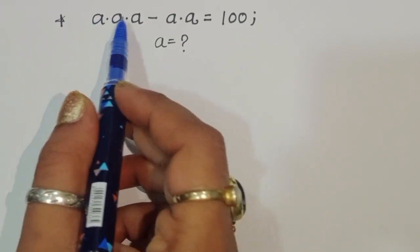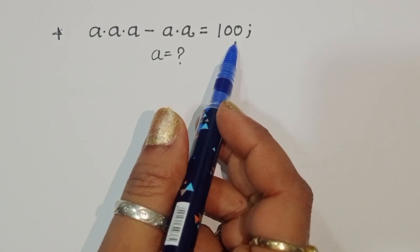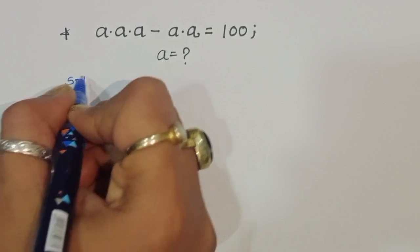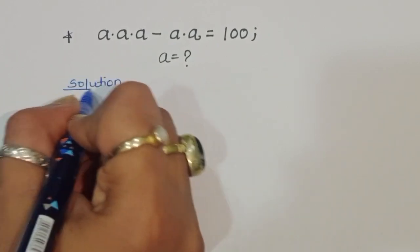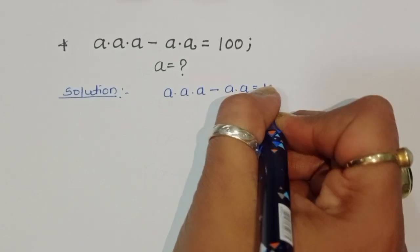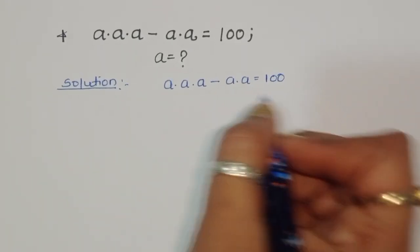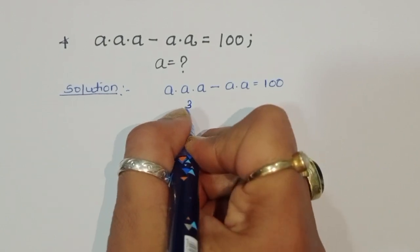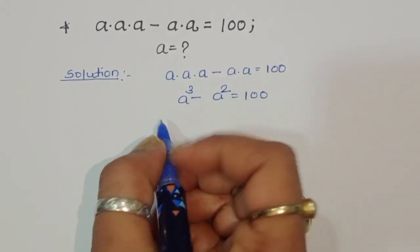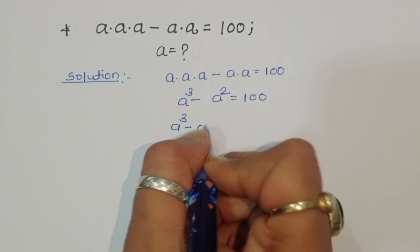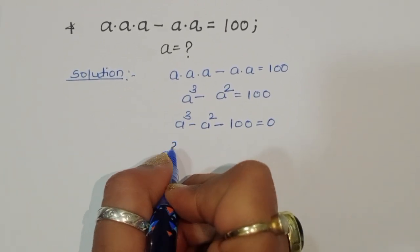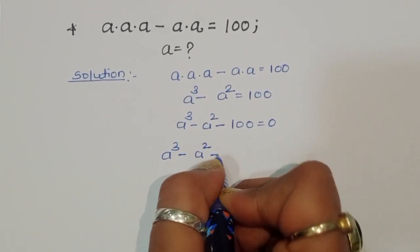The question is: given a times a times a minus a times a is equal to 100, we have to find the value of a. In the solution, a times a times a minus a times a equals 100, so we can write this as a cube minus a square equals 100, which gives us a cube minus a square minus 100 equals 0.